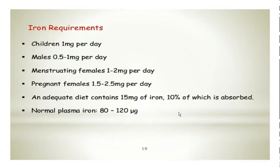The basic iron requirement in an adult male is 0.5 to 1 mg per day; in children it is 1 mg per day; in pregnancy it is almost tripled up. Any adequate diet which contains 15 mg of iron — only 10 percent of which is absorbed. Normal plasma iron is 80 to 120 micrograms.